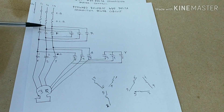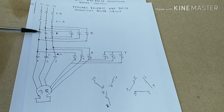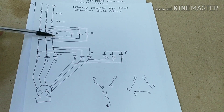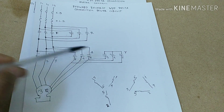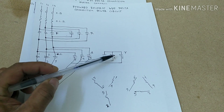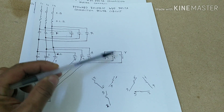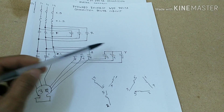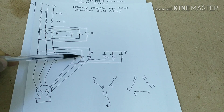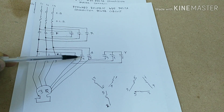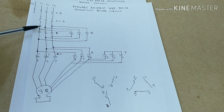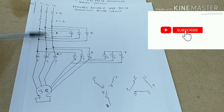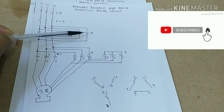If you press the control, this one will close. If you press forward, this one will close, this one will close, and this one will also close. After three seconds, this one will open and this one will activate. After that, if you turn off the control, everything goes back to the normal position.